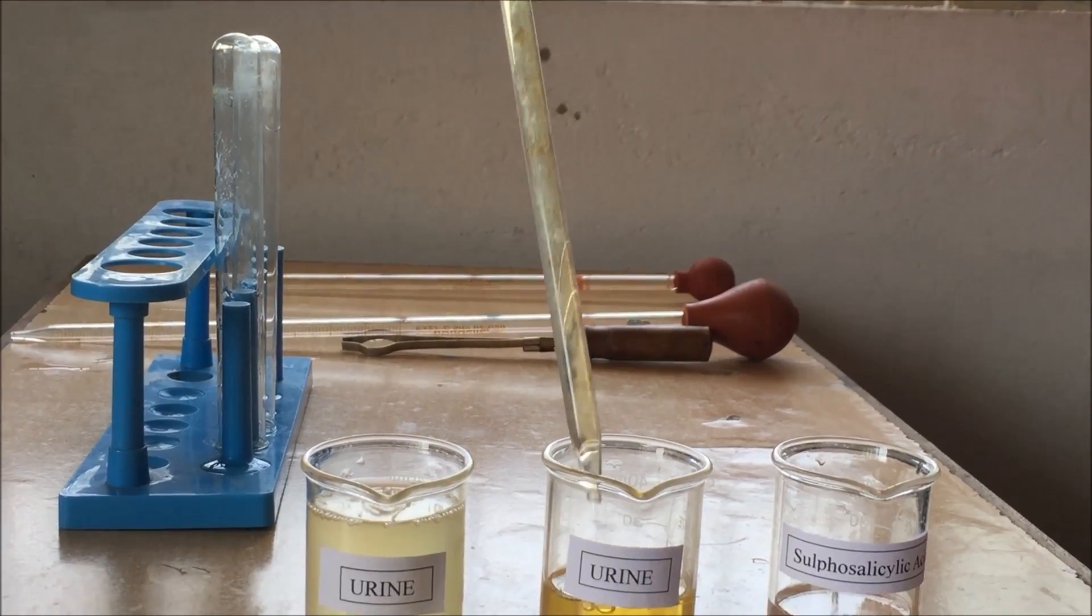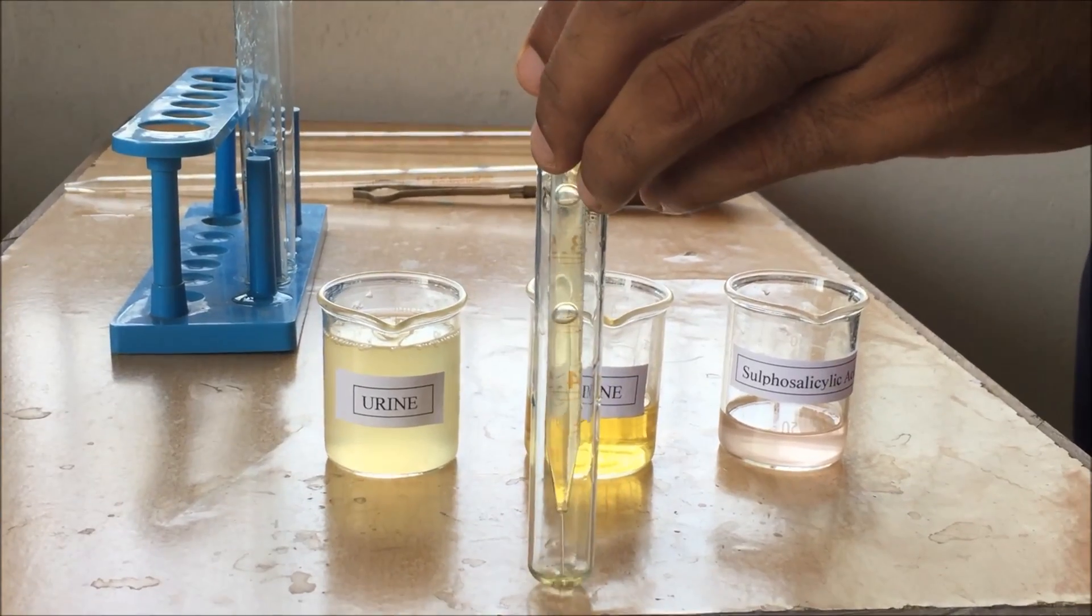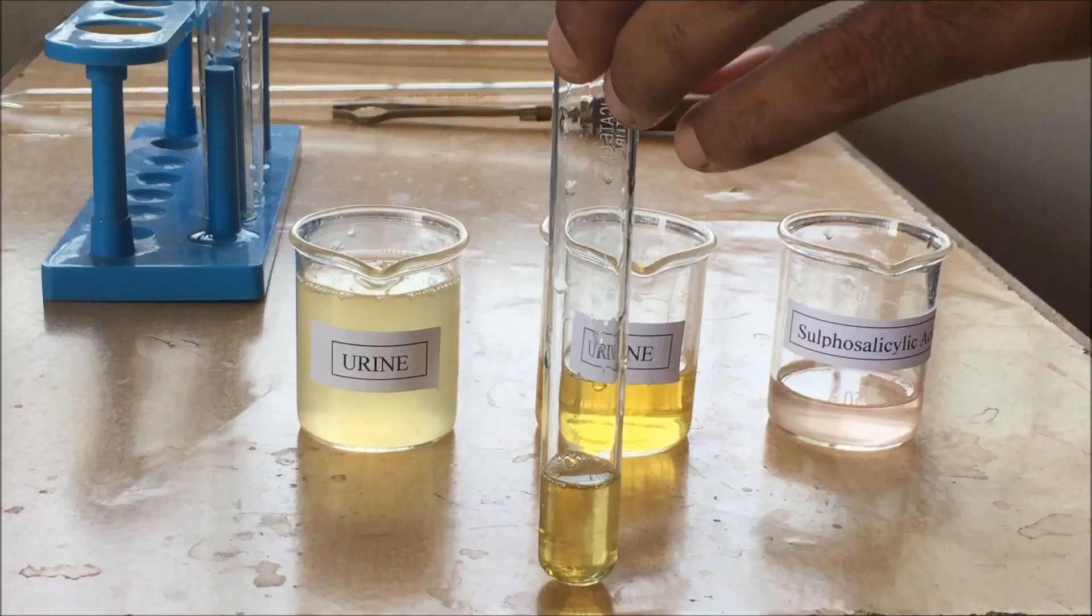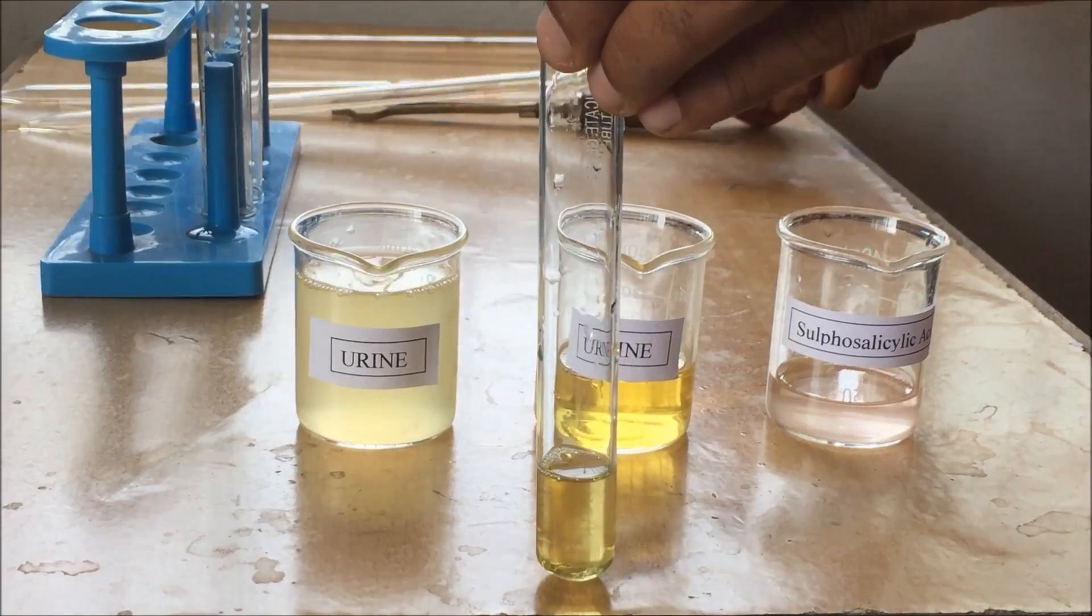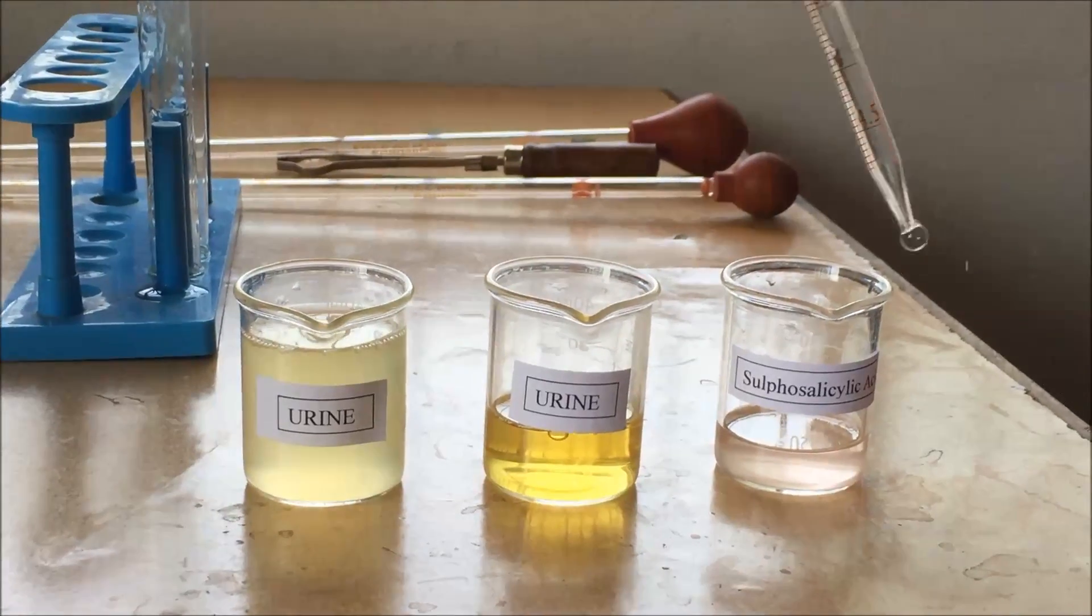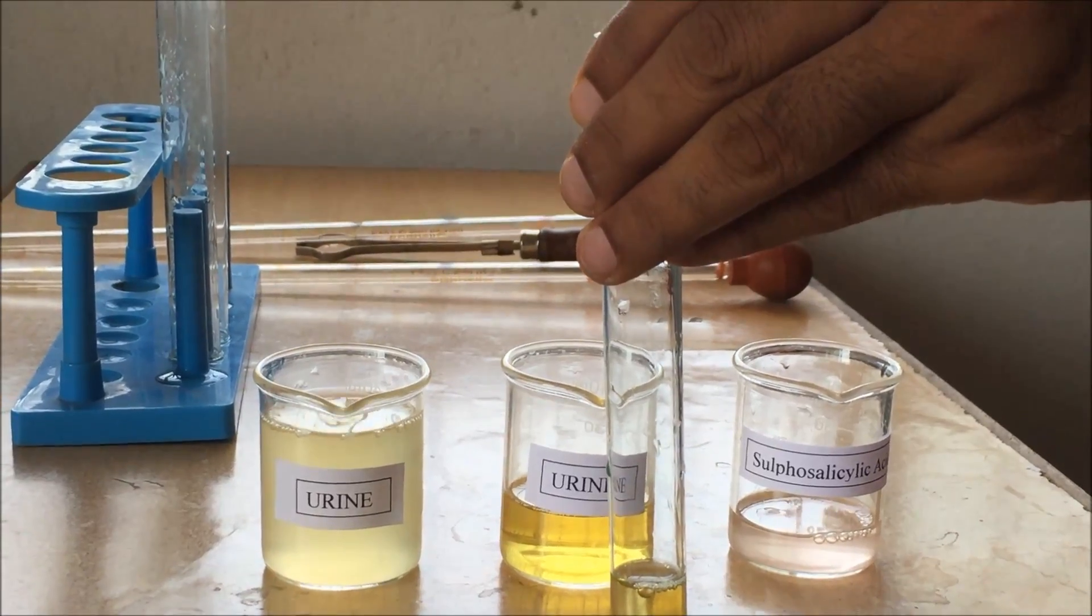Firstly, we poured a small quantity of urine and transferred it to the test tube. The urine sample was collected 10 minutes ago. After transferring the urine sample, gently pour the sulfosalicylic acid of 30% weight by volume.